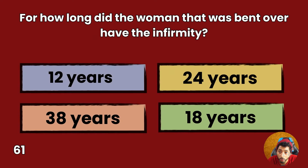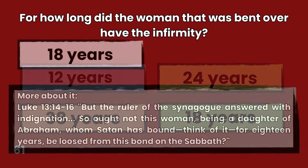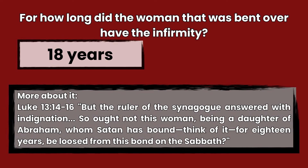Question 61: For how long did the woman that was bent over have the infirmity? 12 years, 24 years, 38 years, or 18 years? Answer: 18 years. Luke 13:14-16 — So ought not this woman, being a daughter of Abraham, whom Satan has bound, think of it, for 18 years, be loosed from this bond on the Sabbath?